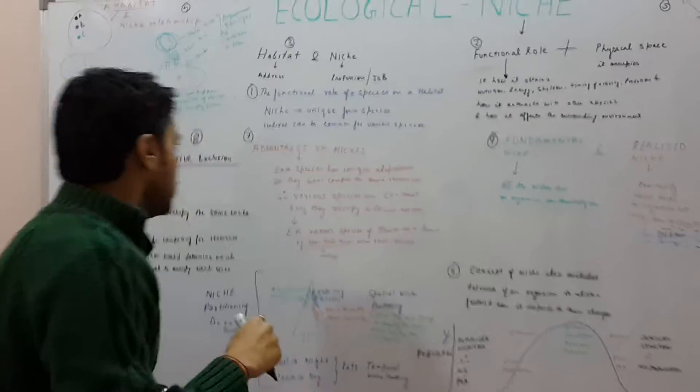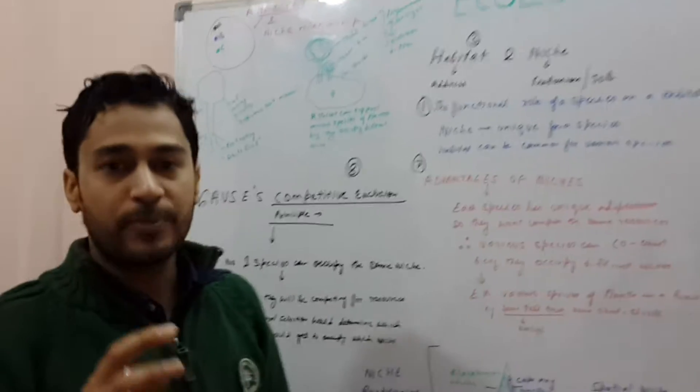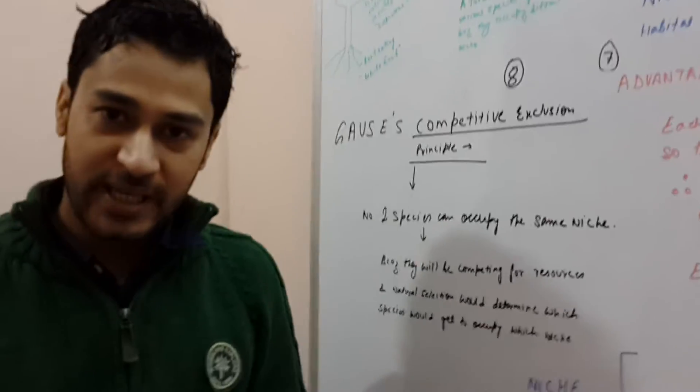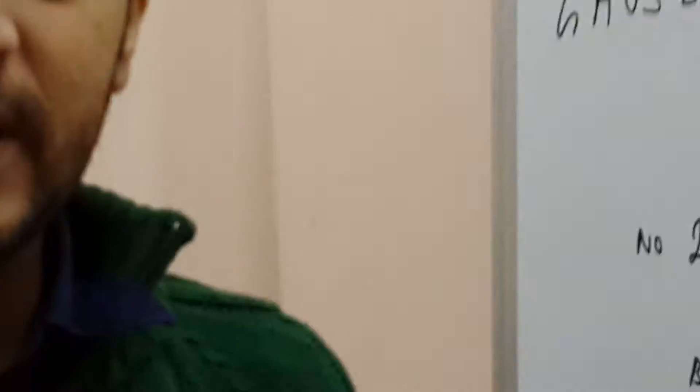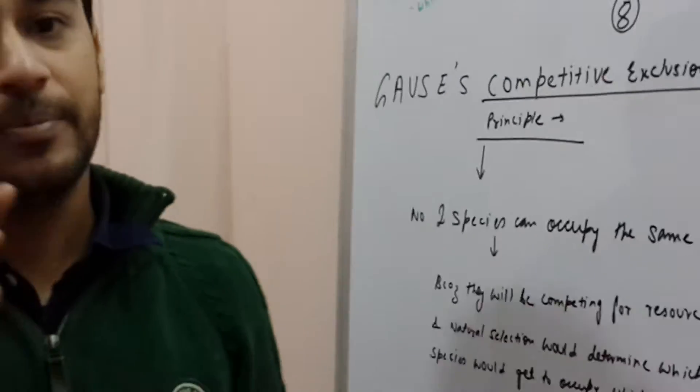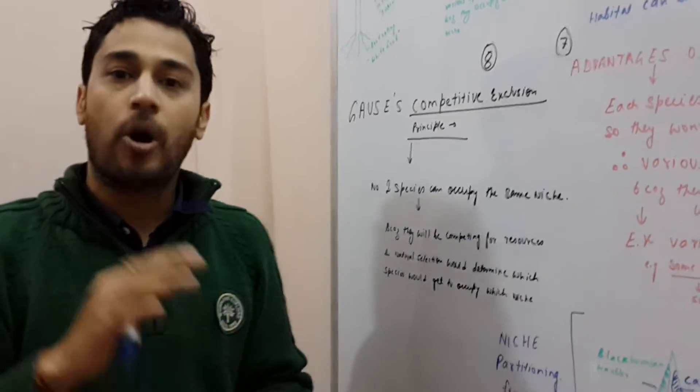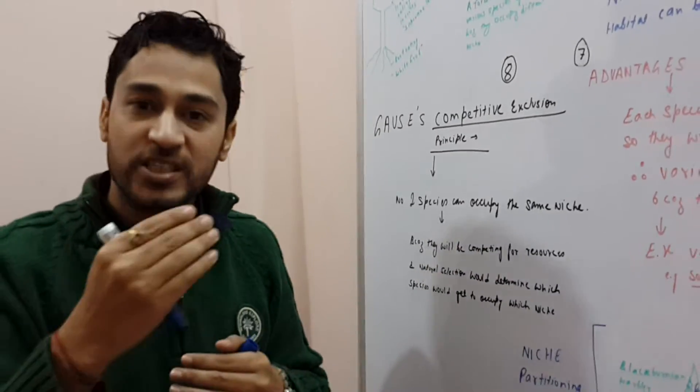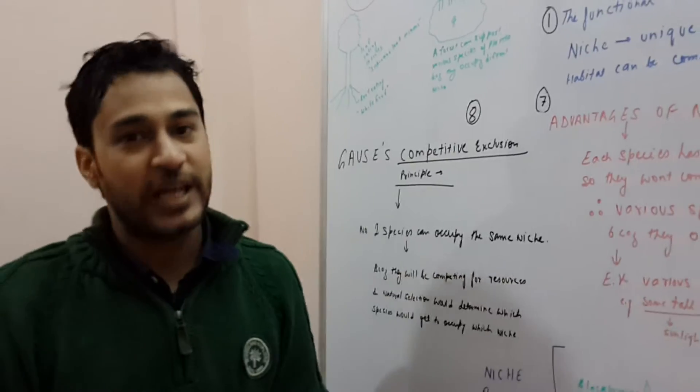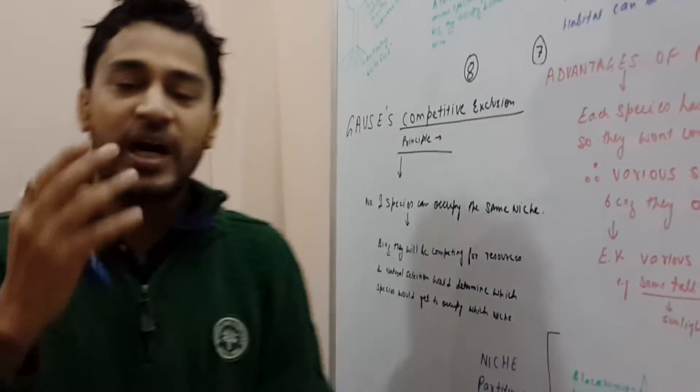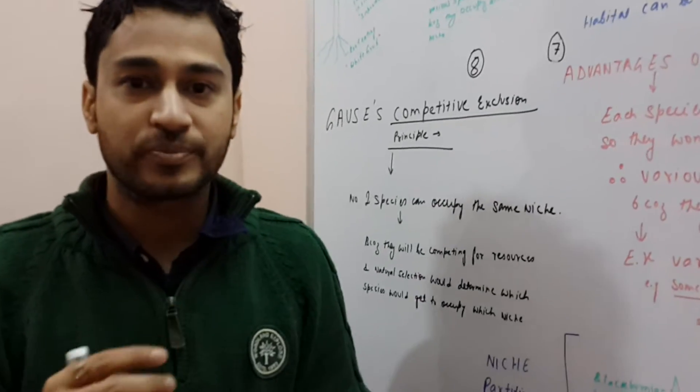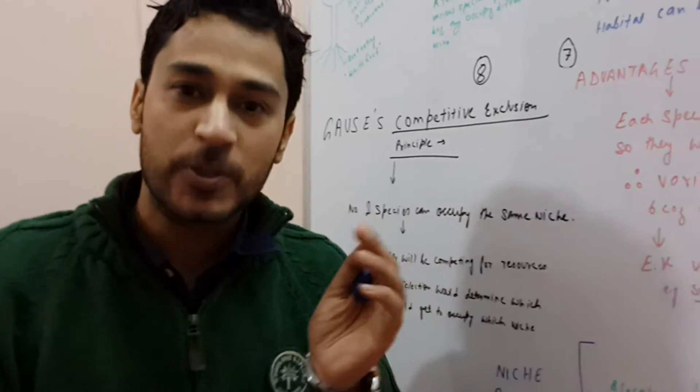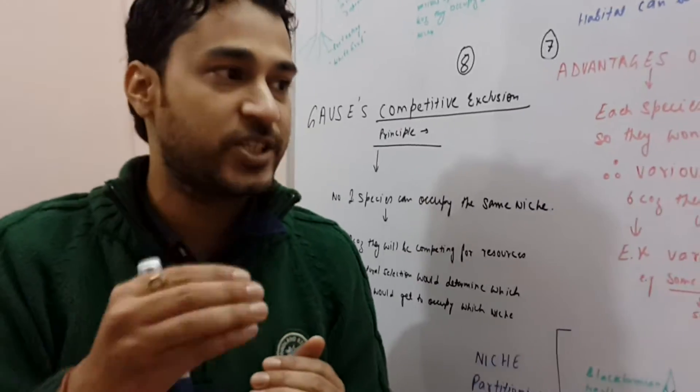So now, let's come to a very important concept called the competitive exclusion principle which was given by Gauss. This says that no two species can occupy the same niche because there will be competition for resources. And ultimately one of the species, that is the weaker one, would have to move away from that niche. So if you remember, Darwin also talked about natural selection.